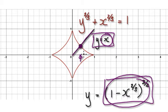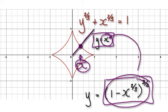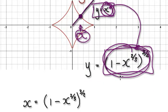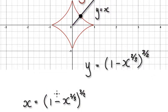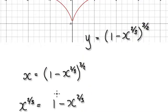Because at this point here, the x value must be the same for both expressions. So basically set this equal to this, and now try and find the value of x.